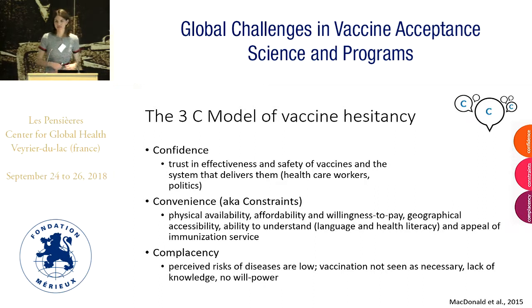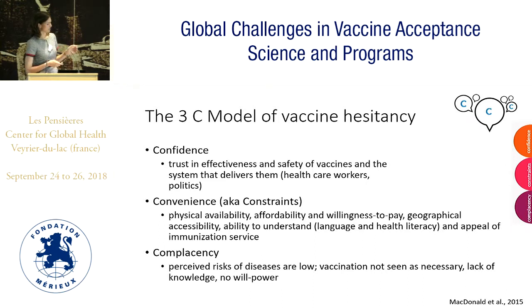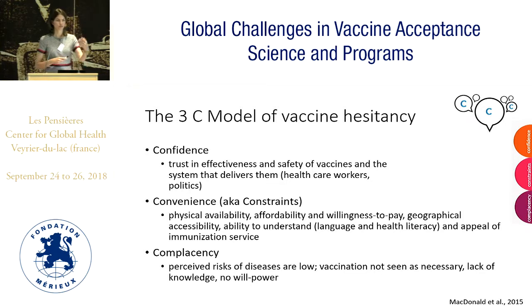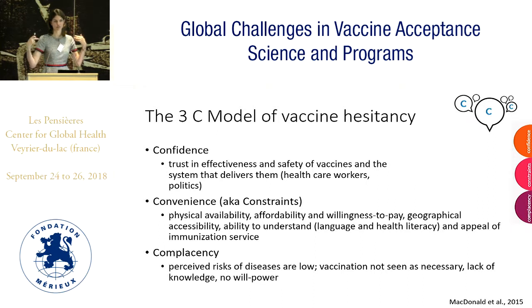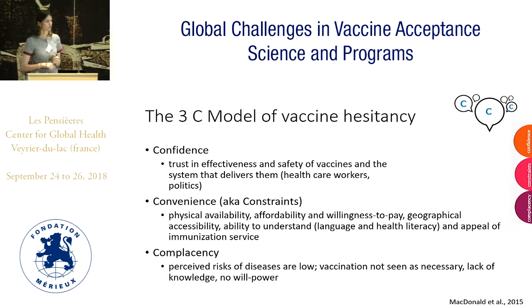Jenna has already said that there is the 3C model of vaccine hesitancy, which has confidence, convenience, and complacency in it. I would like to refer to the convenience factor, because we renamed it as a constraint factor. Convenience is something where we blame people — they are too convenient to get vaccinated — but actually it's a matter of constraints in the environment. Looking at this factor is like looking at the barriers in people's heads that result from the barriers around the people. This 3C model is quite established in the literature and also an outcome of the SAGE working group efforts.